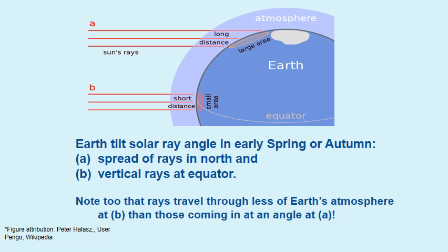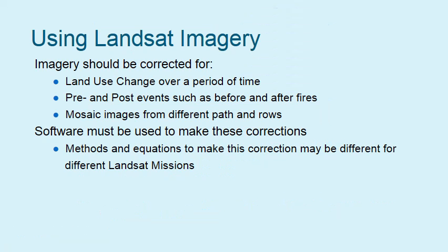Note also that rays travel through more of the Earth's atmosphere at higher latitudes than at the equator. When using Landsat imagery, we should account for these differences in available energy. For example, land use change studies using two different dates may have very different energy values. Pre and post event images — such as for fires or natural or man-made disasters — also need to be corrected. Often a project needs more than one Landsat image mosaicked together from different dates, paths, and rows, and those values should be corrected to be consistent across the project.